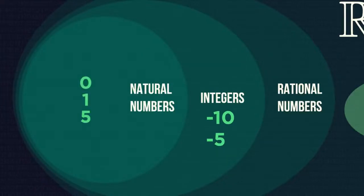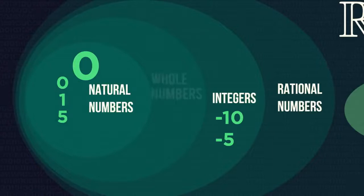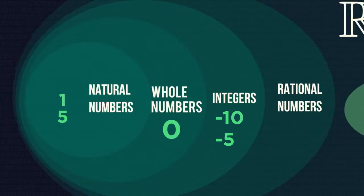Whereas, natural numbers are just from zero and the positive counting numbers. Strangely, there is no general agreement amongst mathematicians about whether to include zero in the natural numbers or not. Sometimes zero is included, sometimes it isn't. If zero isn't considered a natural number, then a whole new category is needed, called whole numbers, which is exactly the same as natural numbers but also includes the zero.